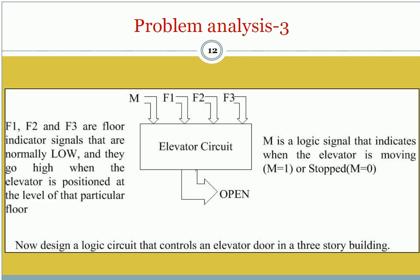We see that there are three floor indicator signals: F1, F2, and F3. There is also another signal, M, which indicates the condition of the elevator — either it is moving or it is stopped. From the problem description, we have four inputs: M, F1, F2, and F3, and there is only one output, which is 'Open'.